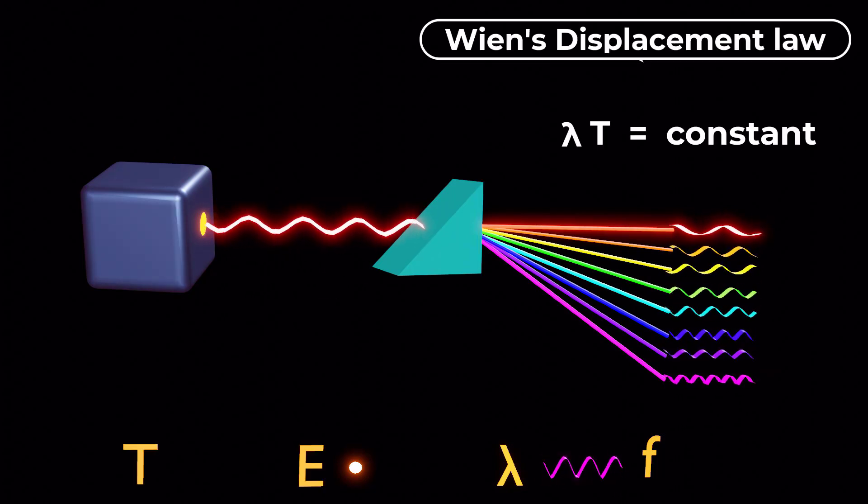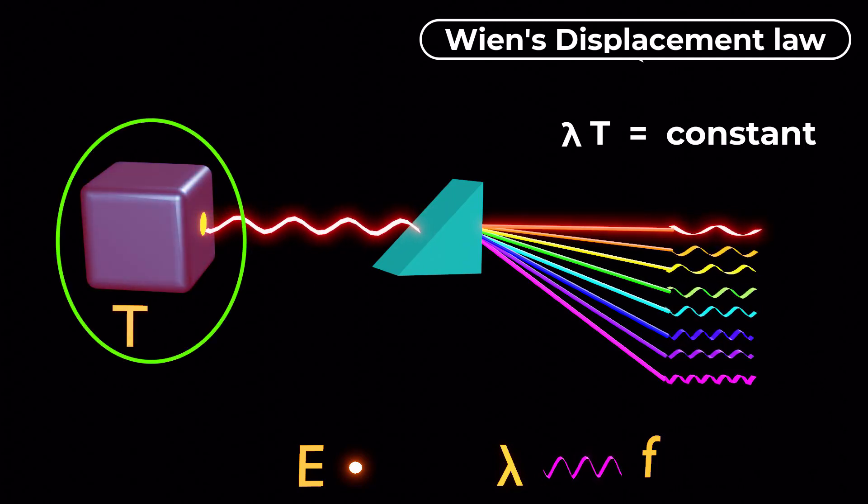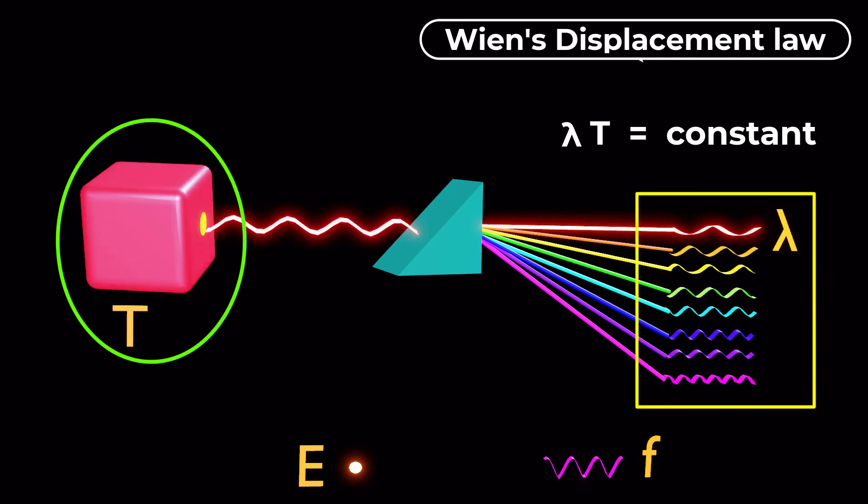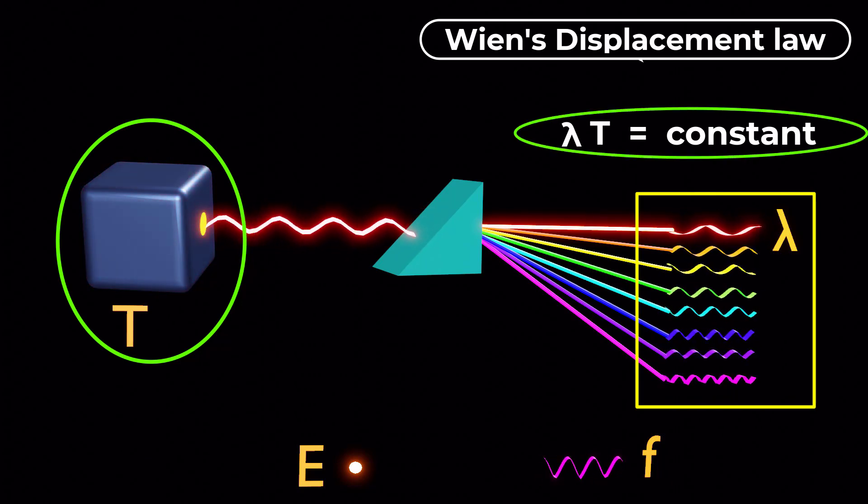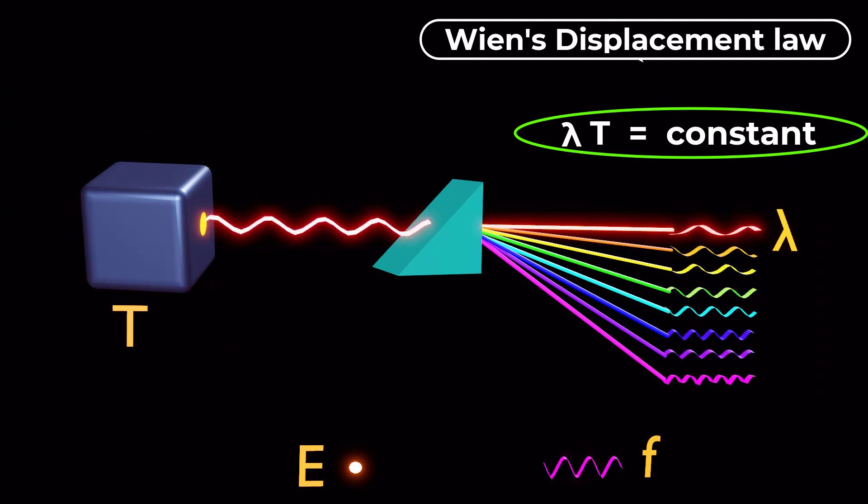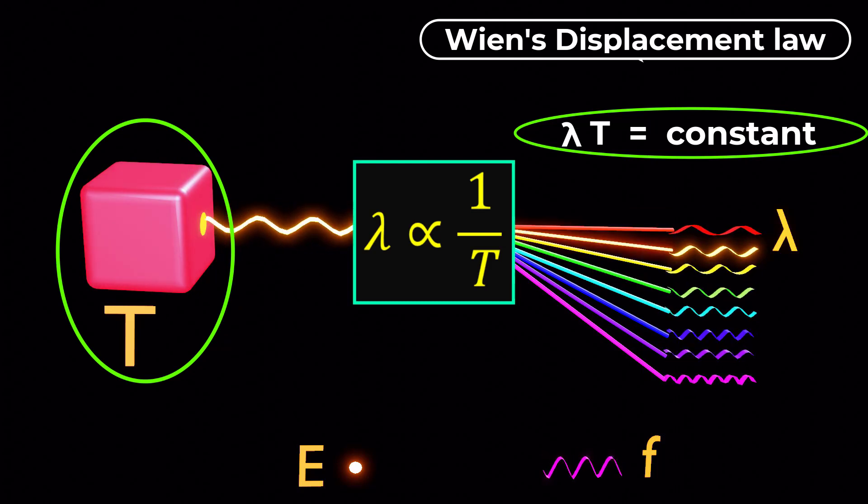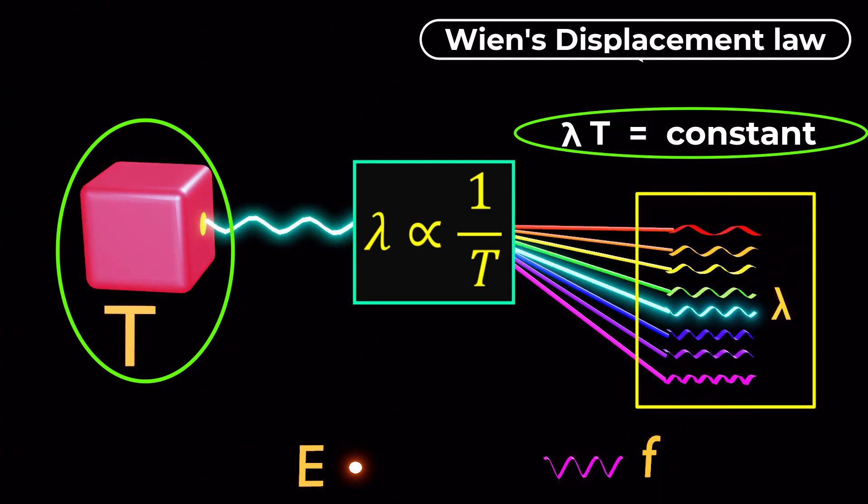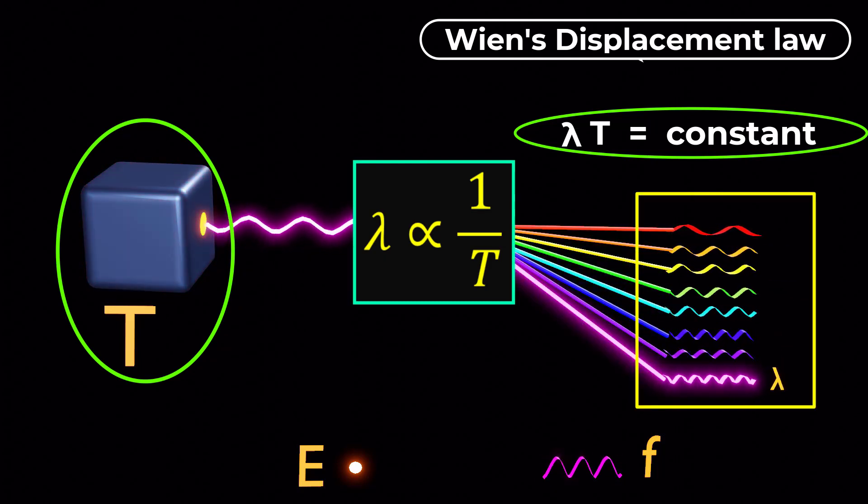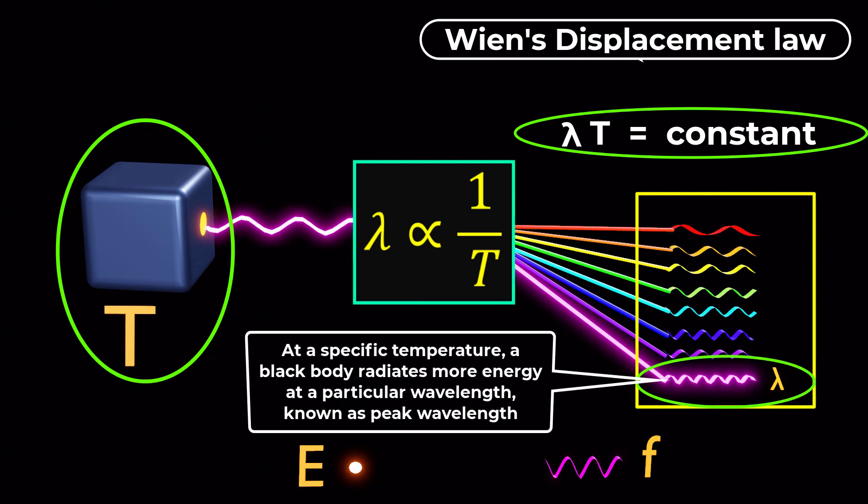Wien's displacement law, on the other hand, establishes a relationship between the temperature of a black body and the peak wavelength. The product of the peak wavelength and the temperature of the black body remains constant. As we increase the temperature of a black body, we observe that the peak wavelengths shift toward the shorter wavelengths. The wavelength with maximum energy is known as the peak wavelength.